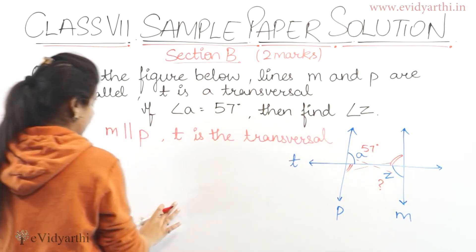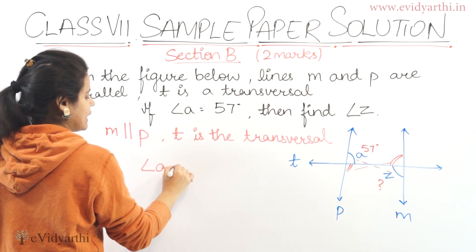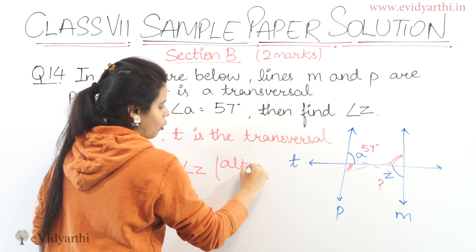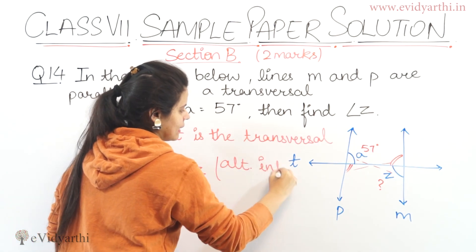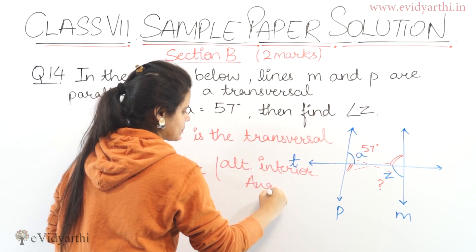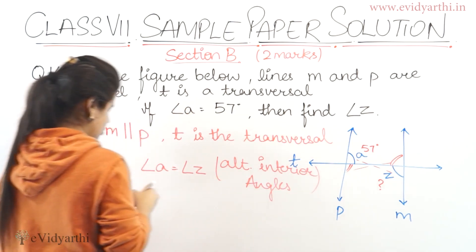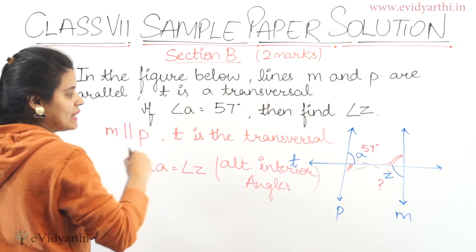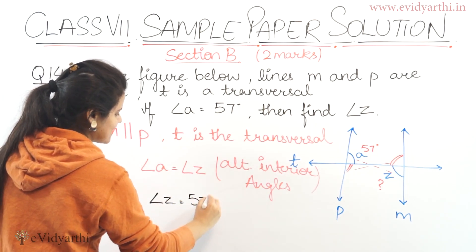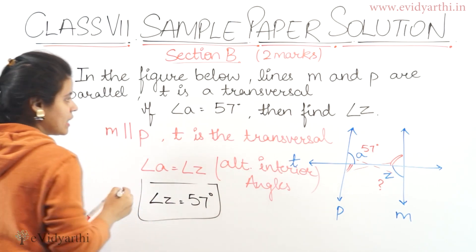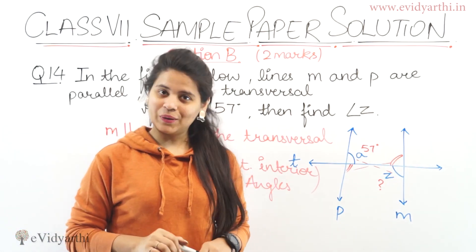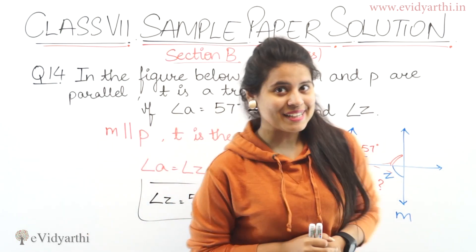Now we can write angle A equals angle Z because they are alternate interior angles. Angle A given is 57 degrees, so angle Z equals 57 degrees. So we have angle Z = 57 degrees. Now let's move to the next question.